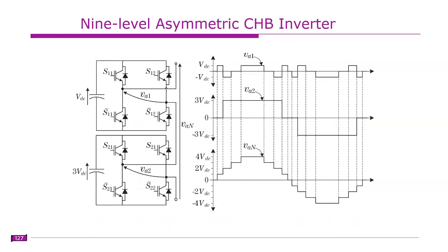Let us assume we have an asymmetrical nine-level inverter topology, for instance. You have VDC on one side and 3VDC on the other side. Usually the H-bridge with the highest voltage — which is 3VDC here — will operate in square wave or quasi square wave operation. This is how it is controlled; this is operating in a quasi square wave.